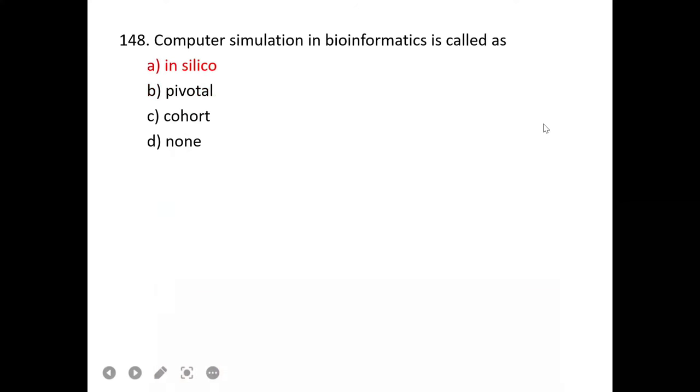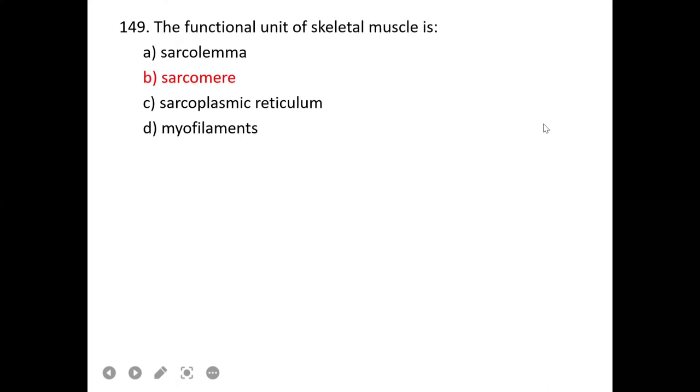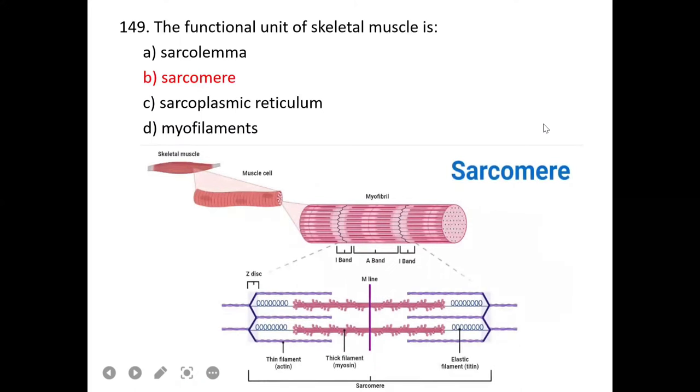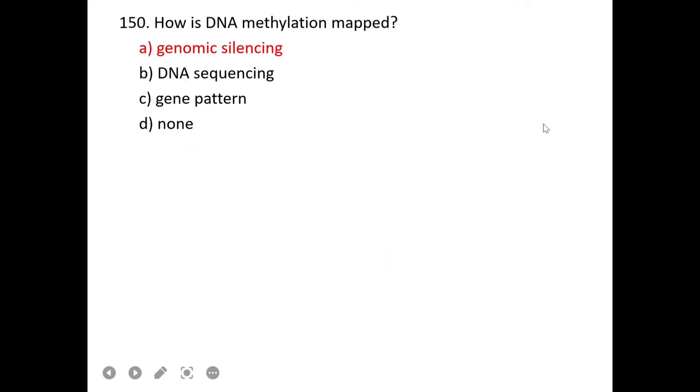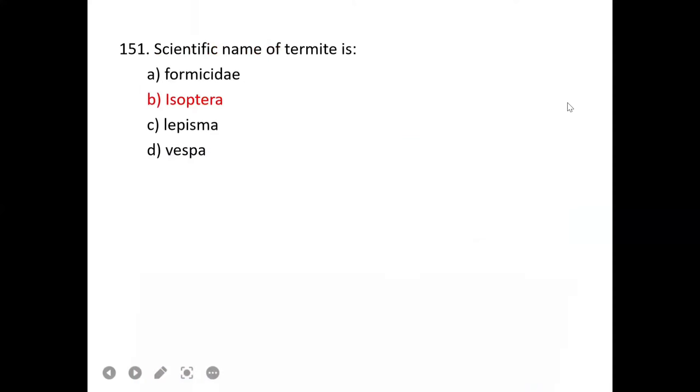Shape of transfer RNA: transfer RNA's shape is like a clover leaf because of three branches. A is correct. Single amino acid coded by multiple codons: a single amino acid like leucine, if coded by multiple codons, is called degenerate code. A is correct. That's all. Thank you so much.